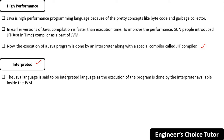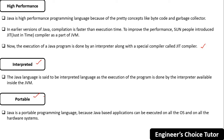The next buzzword is portable. A portable application is one which can run on every operating system and every processor. Java is a portable programming language because Java-based applications can be executed on all operating systems and on all hardware systems.